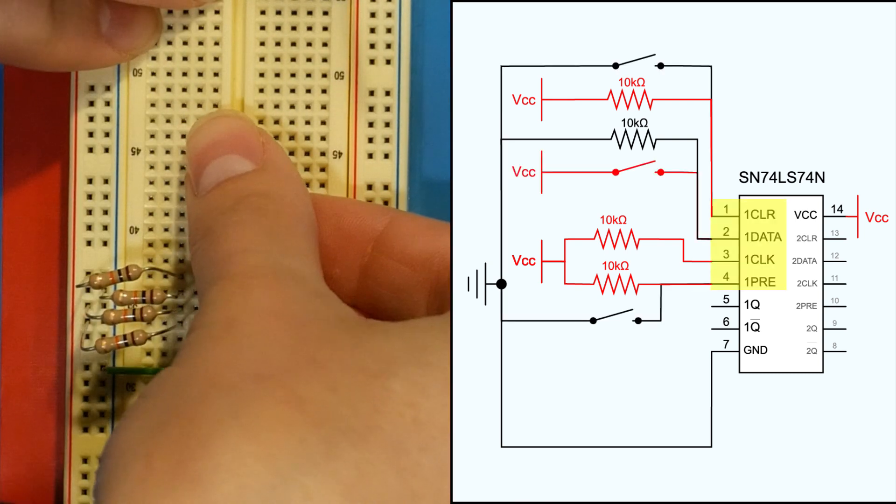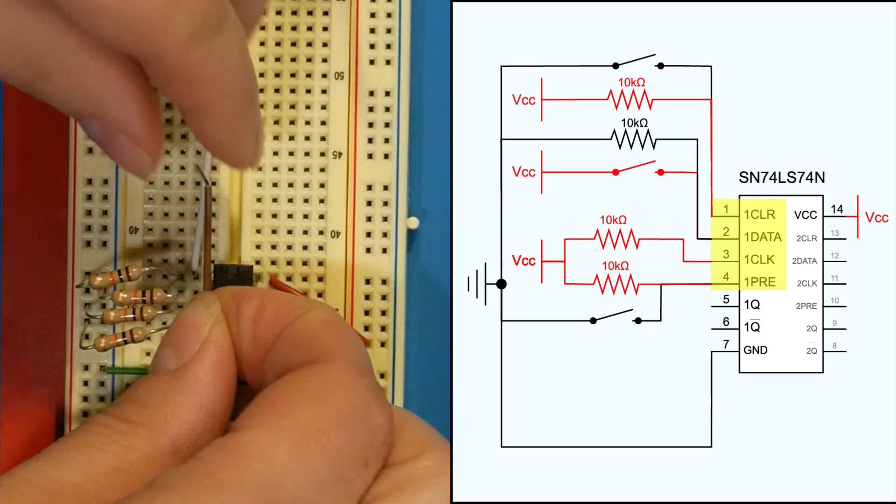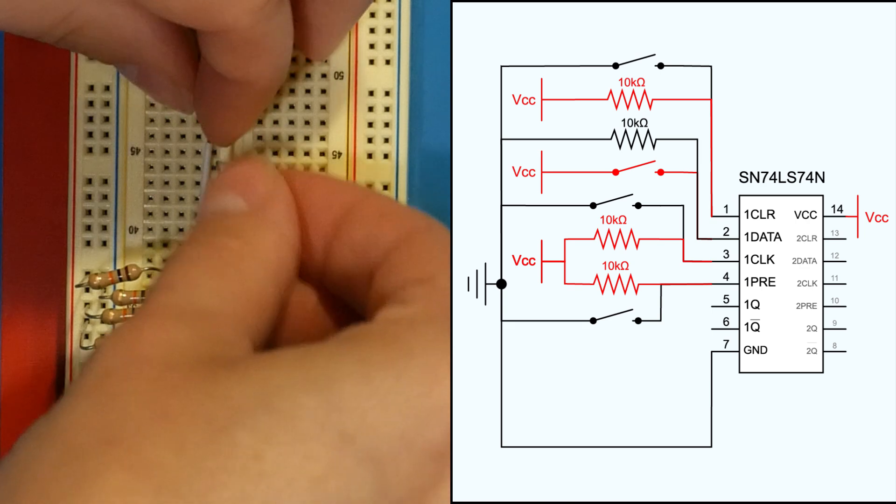We'll add a button for each of the four inputs. Since preset, clear, and clock are active low, their buttons are going to connect to ground, while data's button is connecting to VCC.